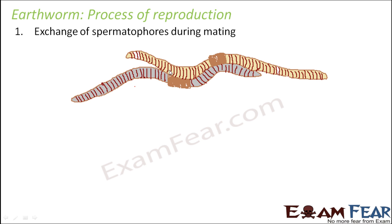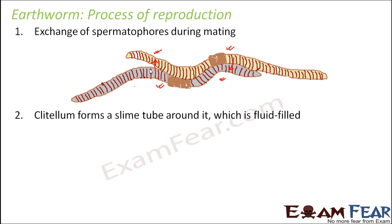At the place where the two earthworms are joined, each gives its sperm to the other. The front side of both earthworms is where they receive sperm, and the back side is where they give sperm. They align themselves so that the front of one overlaps with the back of the other, enabling mutual exchange of spermatophores during mating.